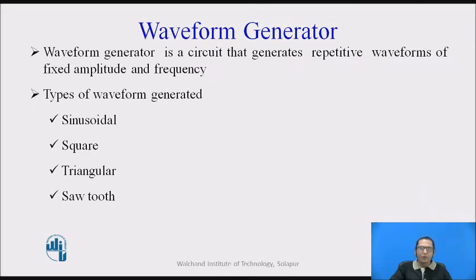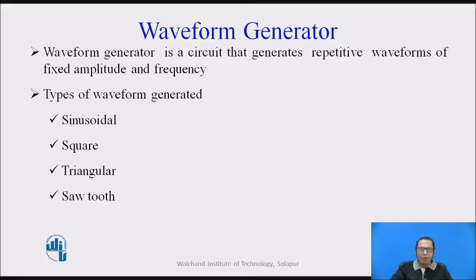As we know, a waveform generator is a circuit which generates repetitive waveforms of fixed amplitude and frequency. We can decide what frequency we want, what amplitude we want, and accordingly we can design the waveform generator. The popular types of waveform generators available can generate sinusoidal signals, square wave signals, triangular wave signals, or even a sawtooth signal.